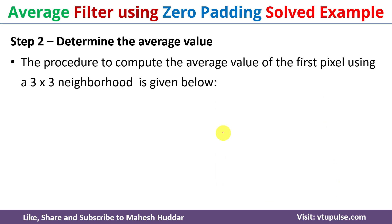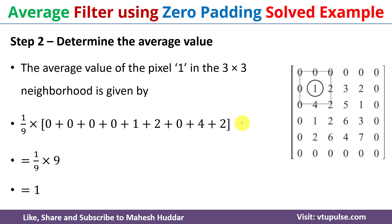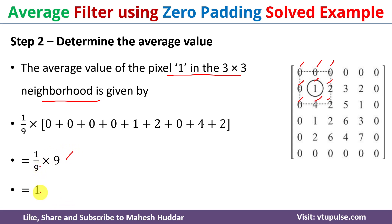The procedure to determine the average value of the first pixel using the three cross three neighborhood matrix is: we need to consider the three cross three neighborhood matrix for pixel 1. The average value is found by adding all nine values and dividing by nine. So: 0+0+0+0+1+2+0+4+2 = 9, divided by 9 = 1. The average value for pixel 1 becomes 1.